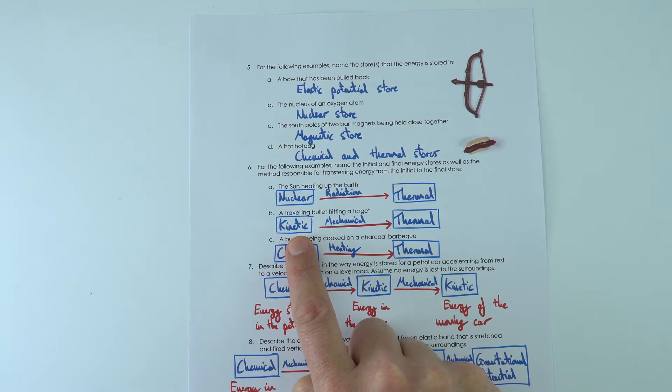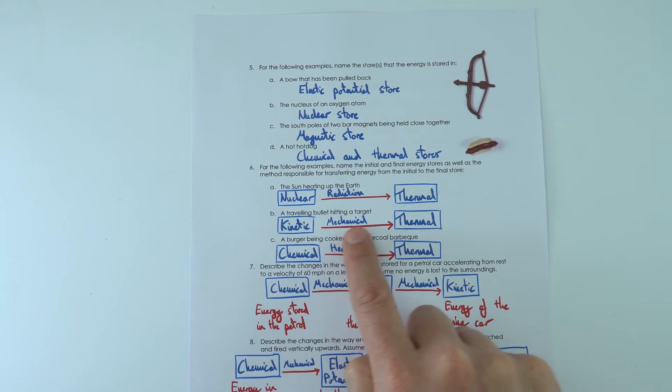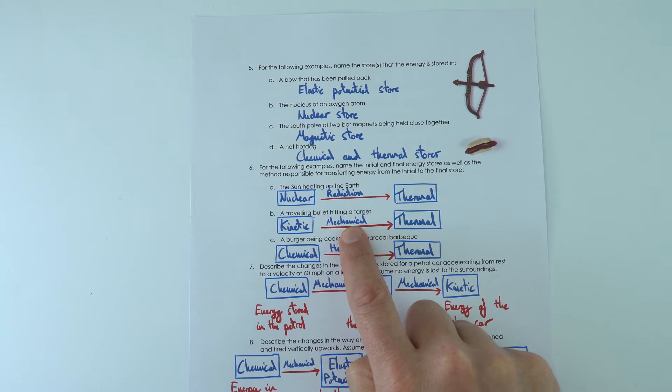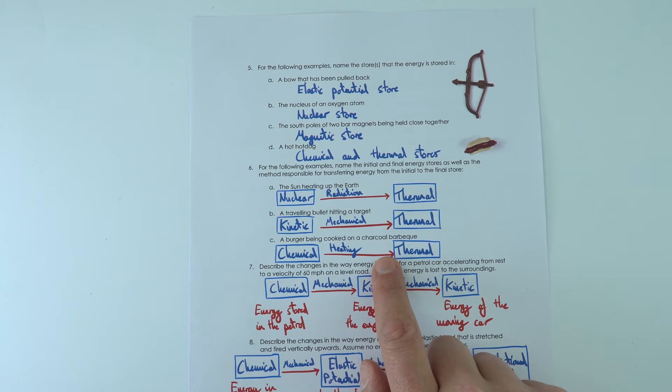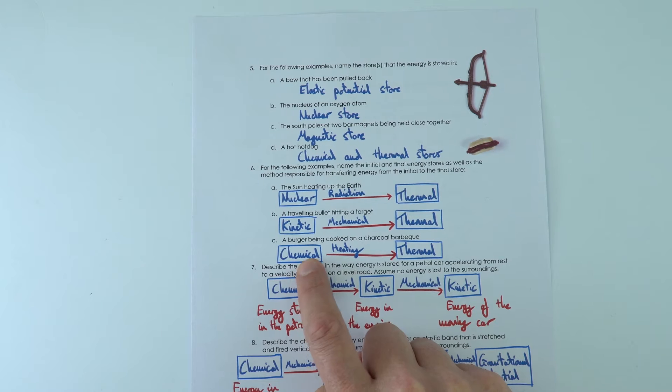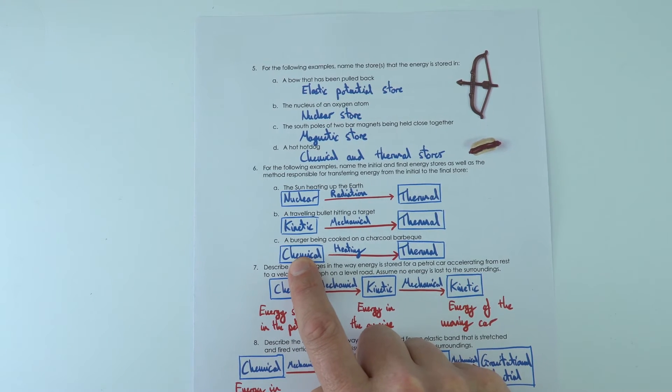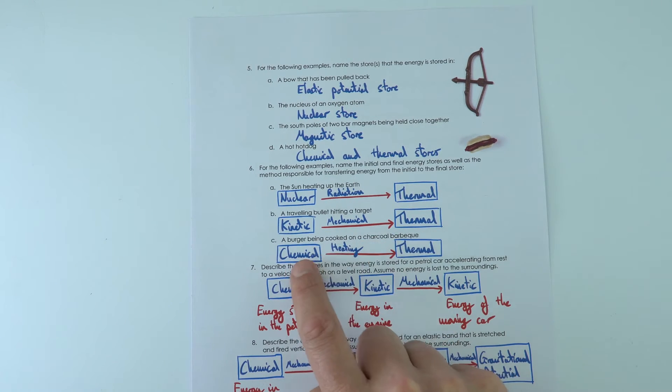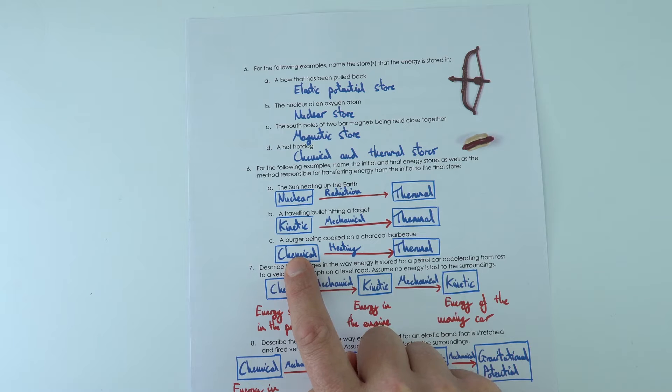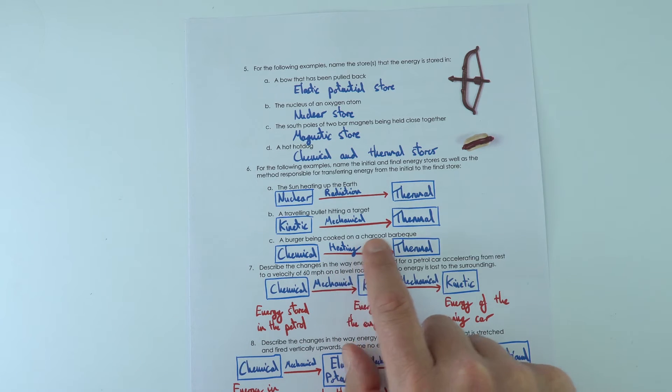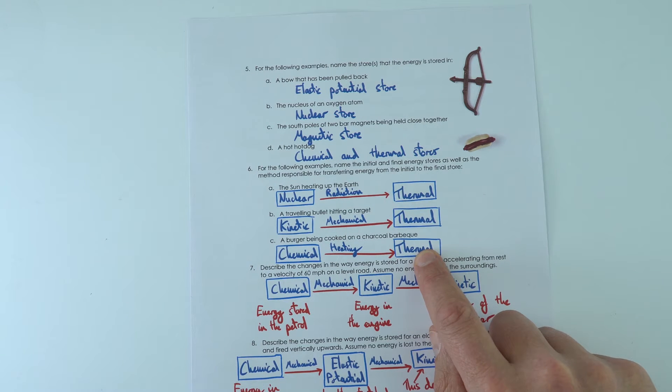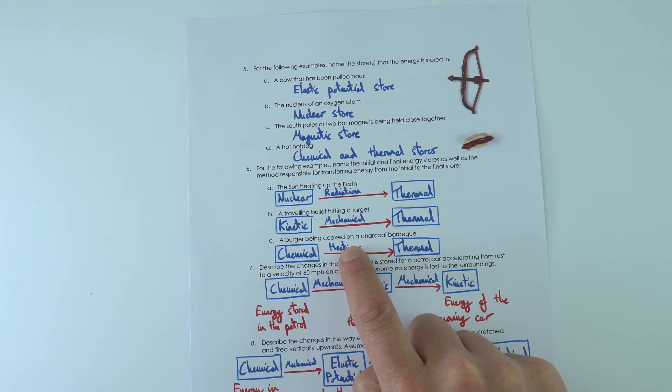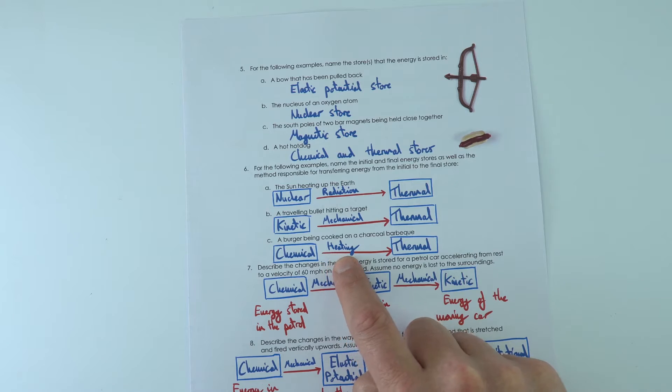Kinetic energy stored in the travelling bullet, because there's a force acting over a distance, ultimately this increased the thermal energy of the target, and the burger being cooked on a charcoal barbecue. We've not only got the chemical store here, which is of the charcoal, but as this is burnt, that chemical store by heating mainly causes the thermal store of that burger to increase. It's going to be mainly heating, maybe a bit of radiation as well with infrared.